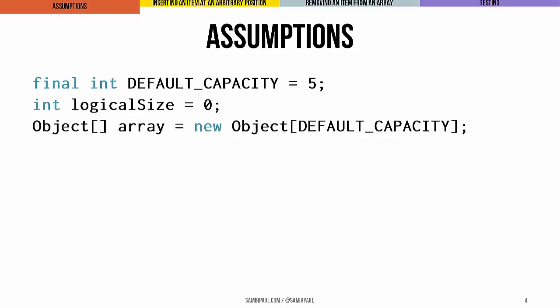We'll also assume that we have these declarations: the default capacity of the array, which will be five; the initial logical size, which is going to be zero because we won't have anything in the array so far; and the array itself, which is declared and instantiated to be of the size default capacity, in this case, five.